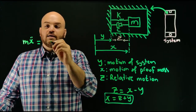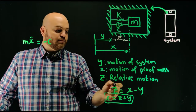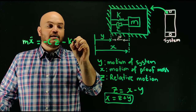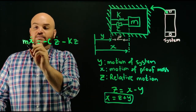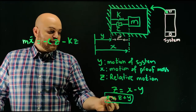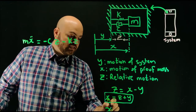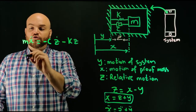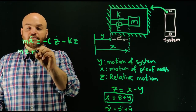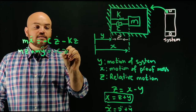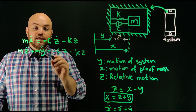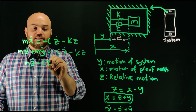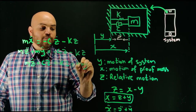So the equation is M·Ẍ = −C·Ż − K·Z, where Z = X − Y. Now since X = Z + Y, we have Ẍ = Z̈ + Ÿ. Substituting into the equation gives M·Z̈ + M·Ÿ = −C·Ż − K·Z. Rearranging, we get M·Z̈ + C·Ż + K·Z = M·Ÿ.